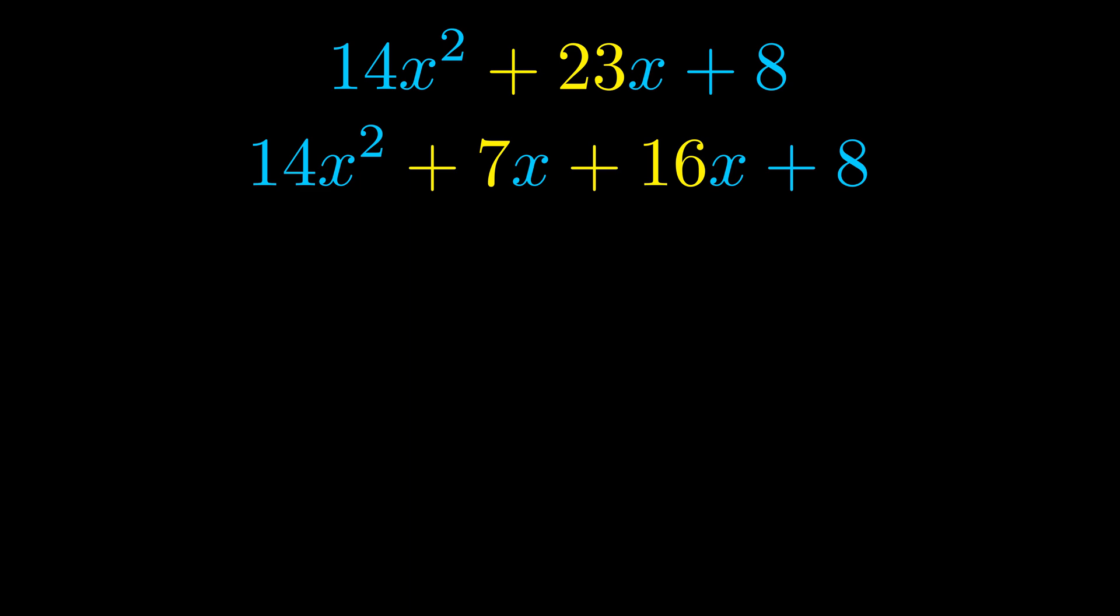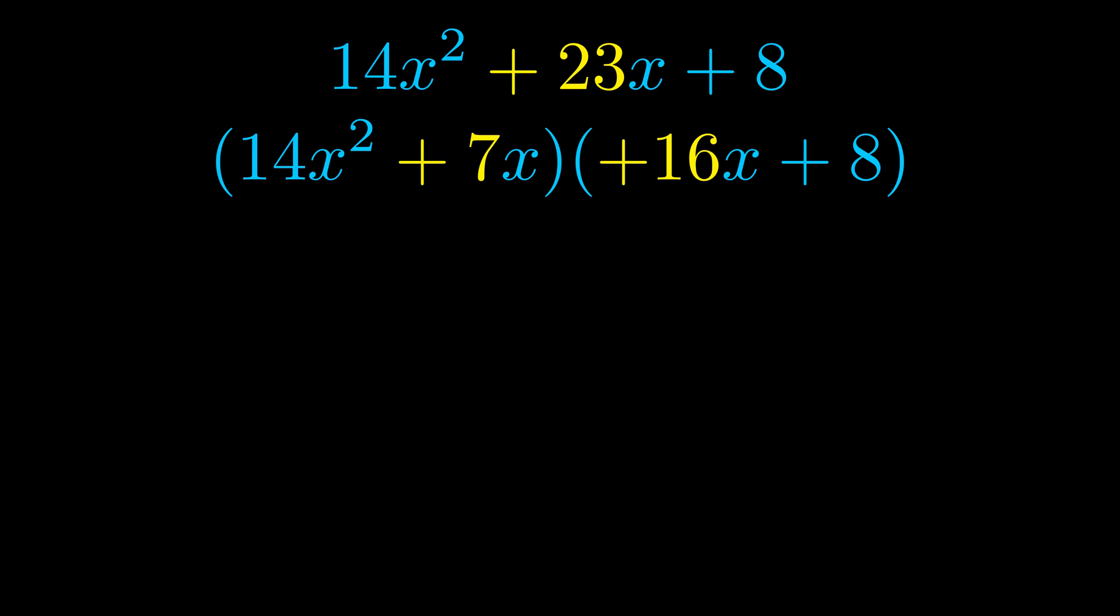Once we've done this, we go ahead and put parentheses around the first term and the last term. And we do that so that we can take the greatest common factor out of both terms. We can see the greatest common factor is now outside in green.